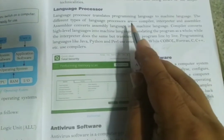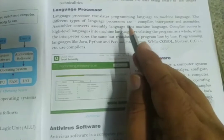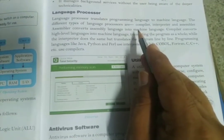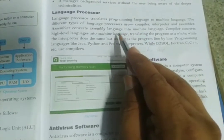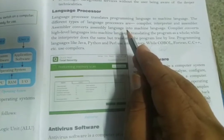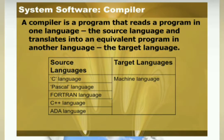There are two types of language processors: compiler and interpreter. A compiler is a program that reads a program in one language — called the source code — and translates it into an equivalent program in another language, called the object code. Examples include C language, Pascal, Fortran, and C++. The compiler converts the whole code at once to machine level.